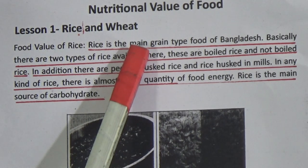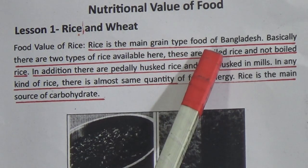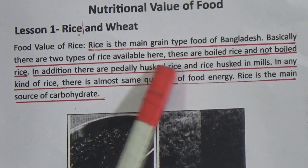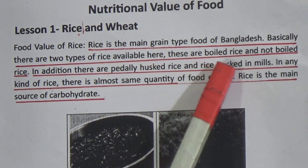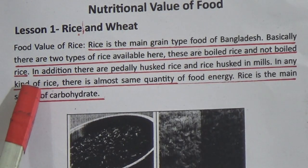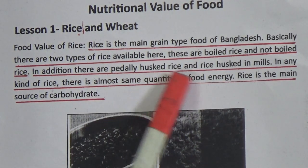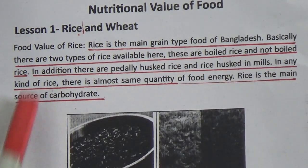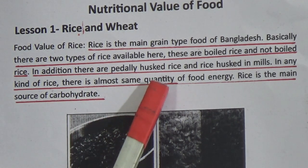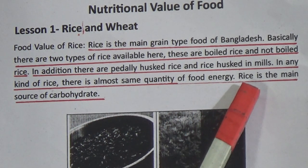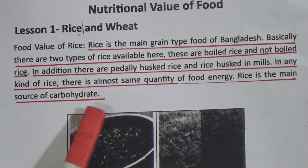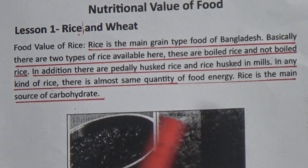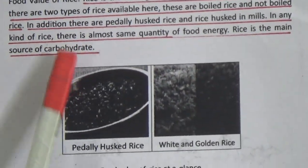Food value of rice. Rice is the main grain type food of Bangladesh. Basically, there are two types of rice available: boiled rice and not boiled rice. In addition, there are parboiled husked rice and rice husked in mills. In any kind of rice, there is almost the same quantity of food energy. Rice is the main source of carbohydrate.